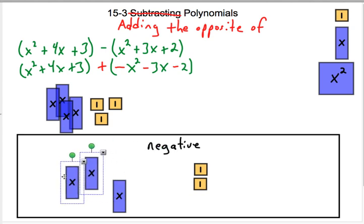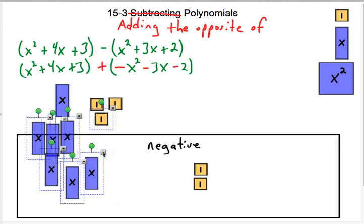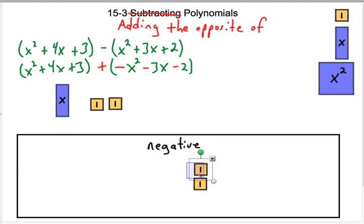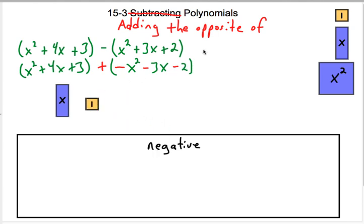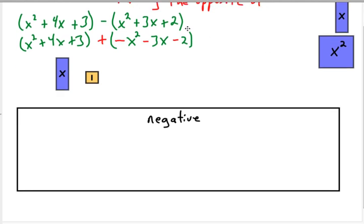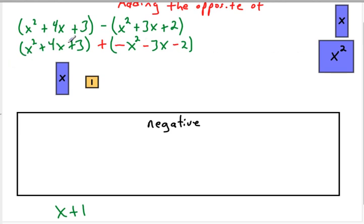These 3 x's are going to cancel out these 3 x's, so those go away. And then these two ones are going to cancel out. I was supposed to have three of these right here — so two of these negative ones are going to cancel out two of the positive ones, and those go away — leaving me with an answer of x plus 1. Let me double-check: x plus 1 is correct.